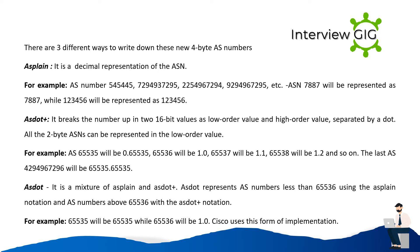There are three different ways to write 4-byte AS numbers. ASPLAIN is a decimal representation of the ASN — for example, AS numbers like 65,535 or 65,536 are written as plain decimals; ASN 7,887 will be represented as 7,887, while 123,456 will be represented as 123,456.